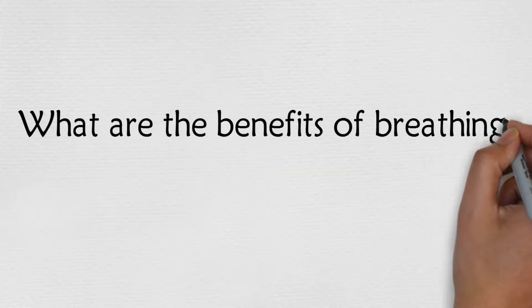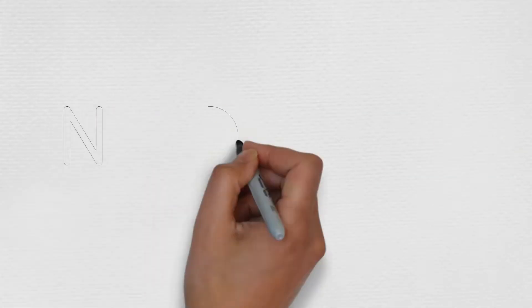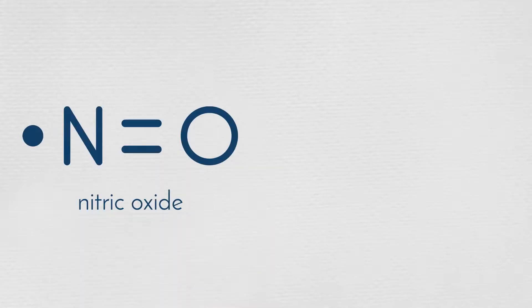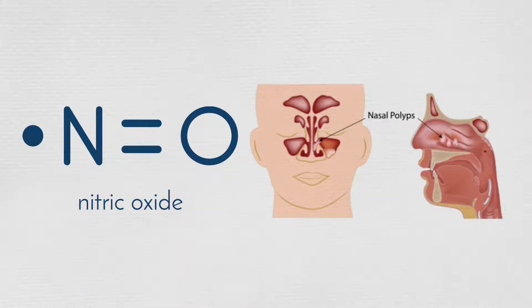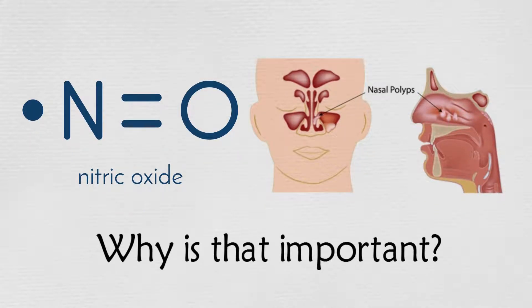What are the benefits of breathing through your nose? A large amount of nitric oxide production takes place in the epithelium of the paranasal sinuses. Why is that important?